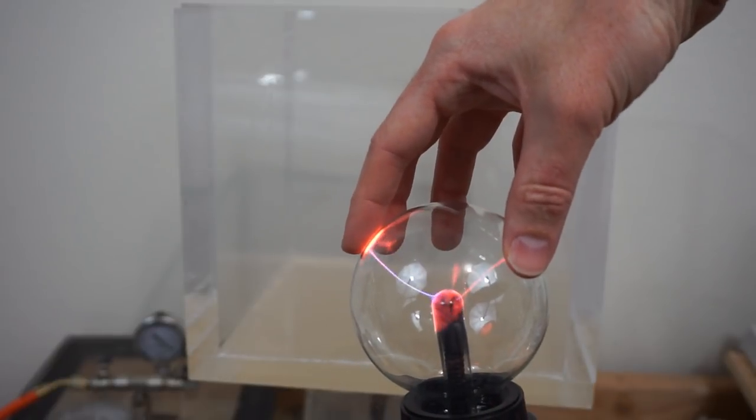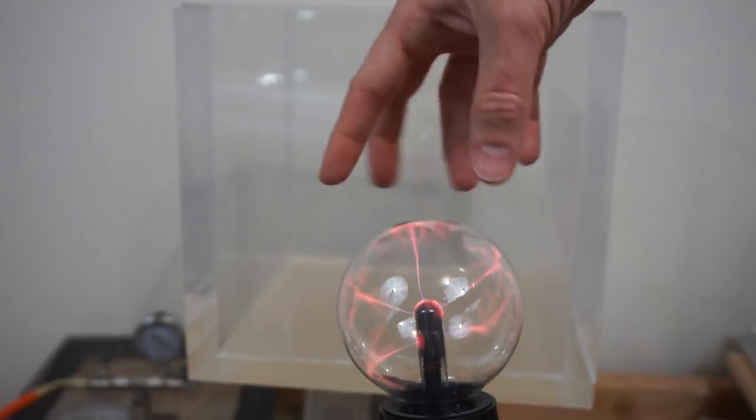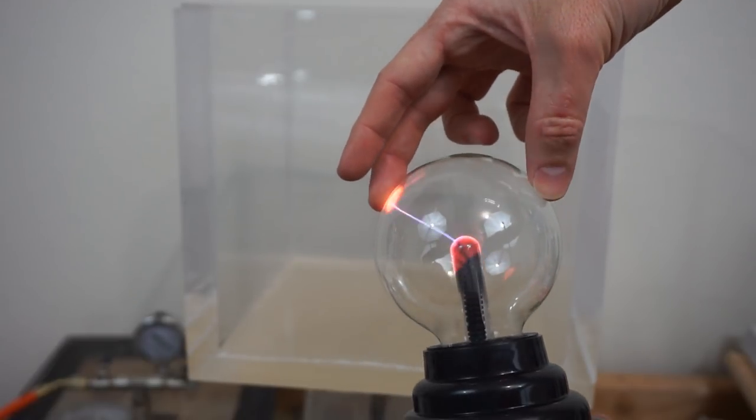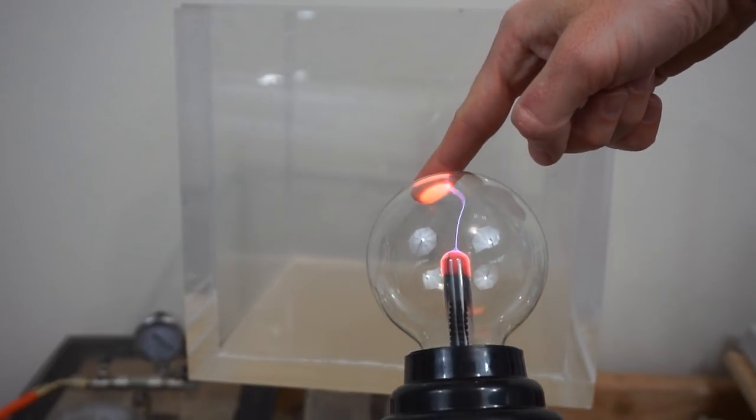So it's called a plasma ball because of those arcs you see there. That's a plasma. What's interesting about plasma is that we might not be very familiar with it here on earth, but it's actually the most common form of matter in the entire universe.